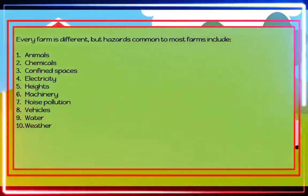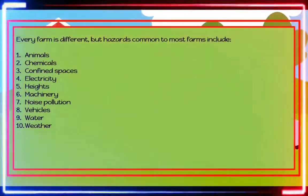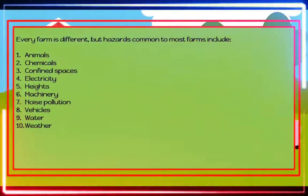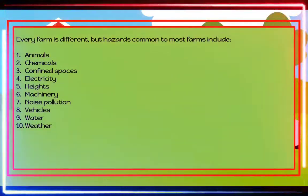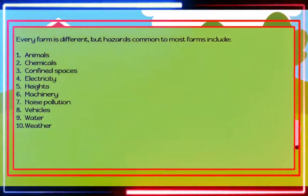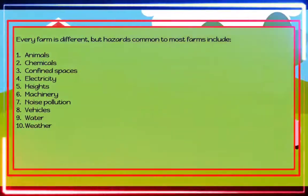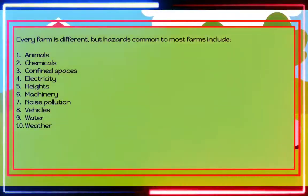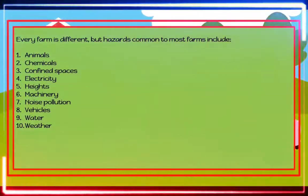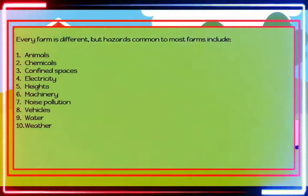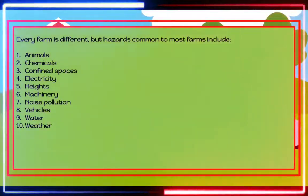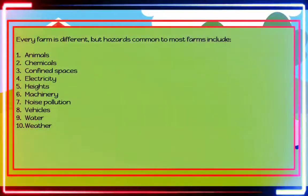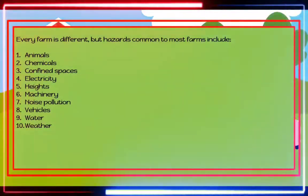Confined spaces may contain unsafe atmospheres which can cause poisoning or asphyxiation. Number four, electricity. Dangers include faulty switches, cords, machinery, or overhead power lines. Number five, heights. Falls from ladders, rooftops, silos, and windmills are a major cause of injury. Number six, machinery hazards include tractors without rollover protection structures, power takeoff shafts, chainsaws, augers, motorbikes, and machinery with unguarded moving parts. Number seven, noise pollution from livestock, machinery, and guns can affect your hearing.